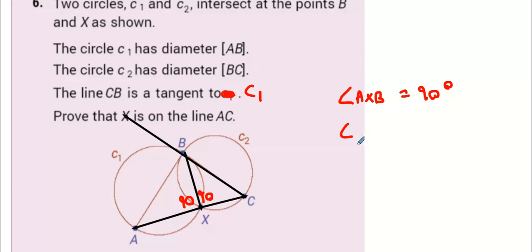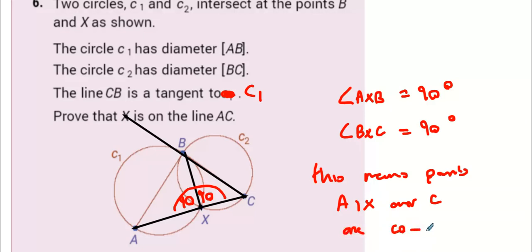So that means angle BXC is 90 degrees. And because this forms a straight angle now, this means points A, X, and C are collinear.